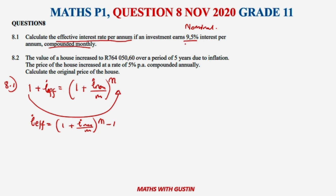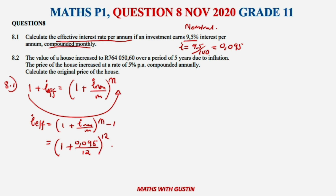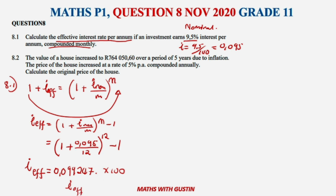We know that i needs to be divided by 100, which gives us 0.095. Substituting into our equation: 1 plus 0.095 all over 12, all to the power of 12, minus 1. Putting this into the calculator, we get an answer of 0.099247. To convert to a percentage, multiply by 100.